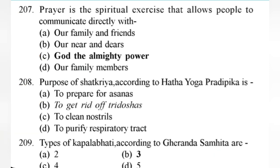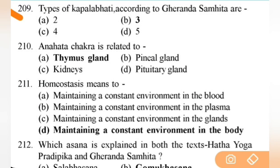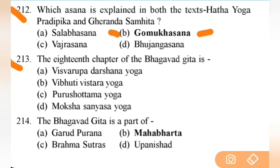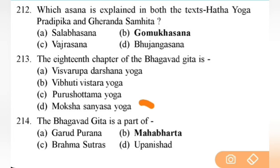Types of Kapalabhati according to Gherand Samhita are — right answer is B — three types. Next: Anahata Chakra is related to the thymus gland. Next: homeostasis means maintaining a constant environment in the body — important. Next: which asana is explained in both Hatha Yoga Pradipika and Gherand Samhita? Right answer is B — Gomukhasana. Next: the 18th chapter of Bhagavad Gita is — right answer is D — Sanyasa Yoga. Bhagavad Gita is a part of Mahabharata.